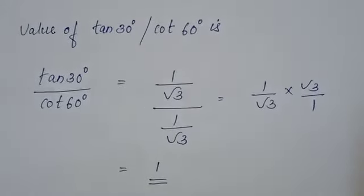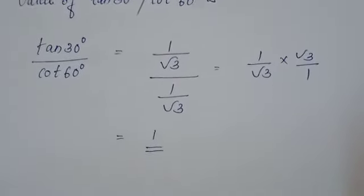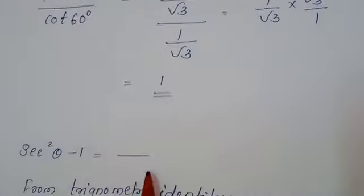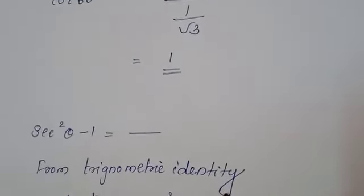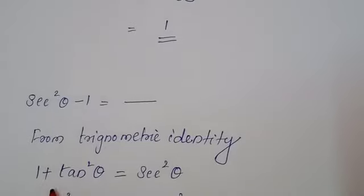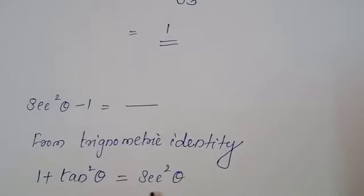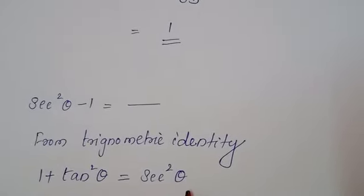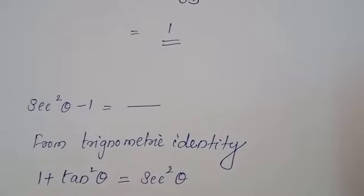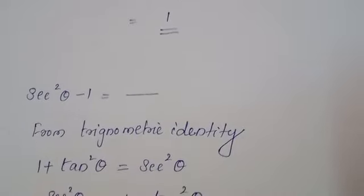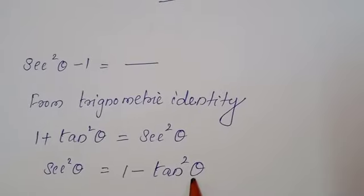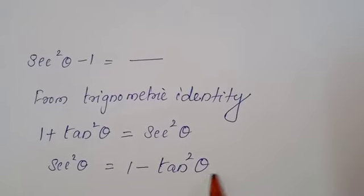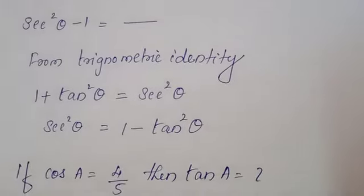The next question is sec² θ minus 1 equals dash. So from the trigonometric identity, as we all know 1 plus tan² θ equals sec² θ. So sec² θ equals what will come? LHS to RHS 1 minus, tan² θ. This is the answer.